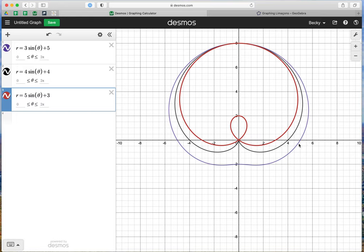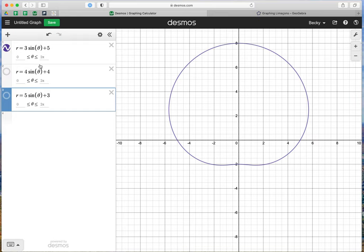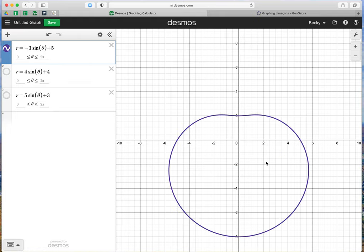The second exploration we were going to look at was what would happen if we had A sine theta plus D, or A cosine theta plus D, and we had a negative value for A. Let's take a look at 3 sine theta plus 5, and let's make it negative 3. I would predict now that this is going to flip so the majority of it is below the x-axis, which is what happened here.